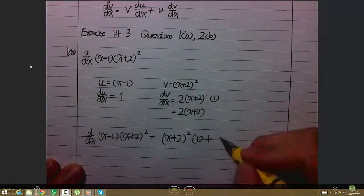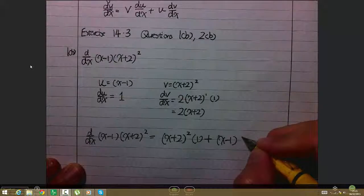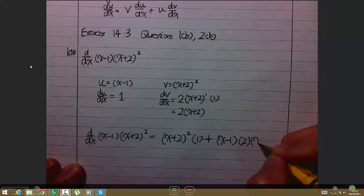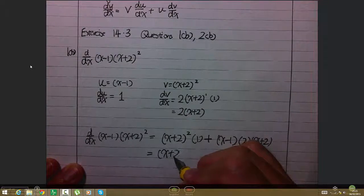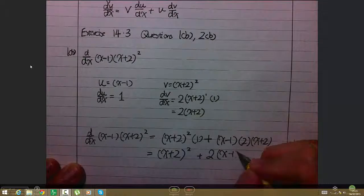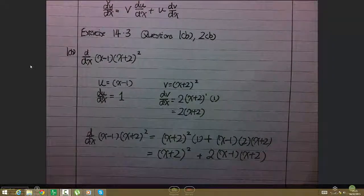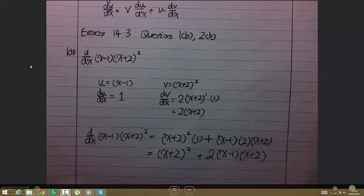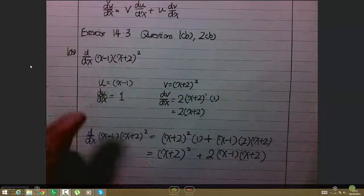So it's (x+2)² times 1 plus (x-1) times 2(x+2). Simplifying, we get (x+2)² + 2(x-1)(x+2). And I have differentiated this function of the form u times v.